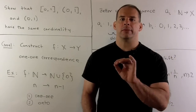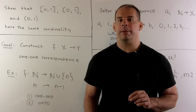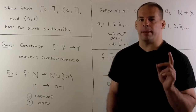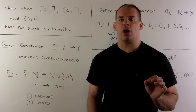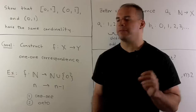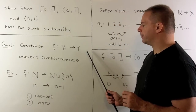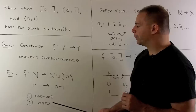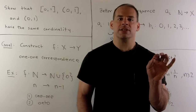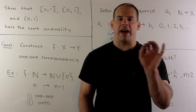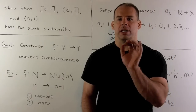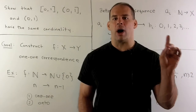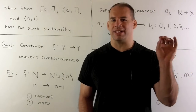Now let's recall the main idea behind cardinality. We say two sets X and Y have the same cardinality if we can construct a one-to-one correspondence f between them. A one-to-one correspondence just means one-to-one and onto. We're taking all the points of X and relabeling them with the names of the points in Y — using every label from Y exactly once.